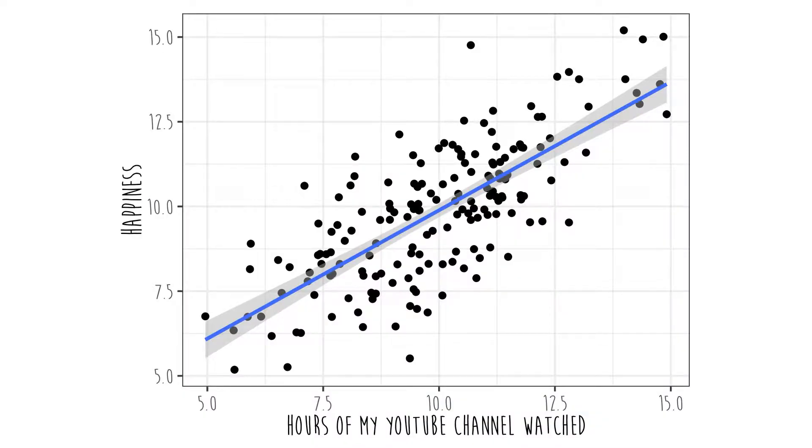So how do we visualize correlational research? It depends on the type of variable that we're looking at — more specifically, if the predictor variable or the independent variable is categorical or numeric. If it's numeric, we use a scatter plot. On the x-axis is the predictor, and on the y-axis is the outcome.